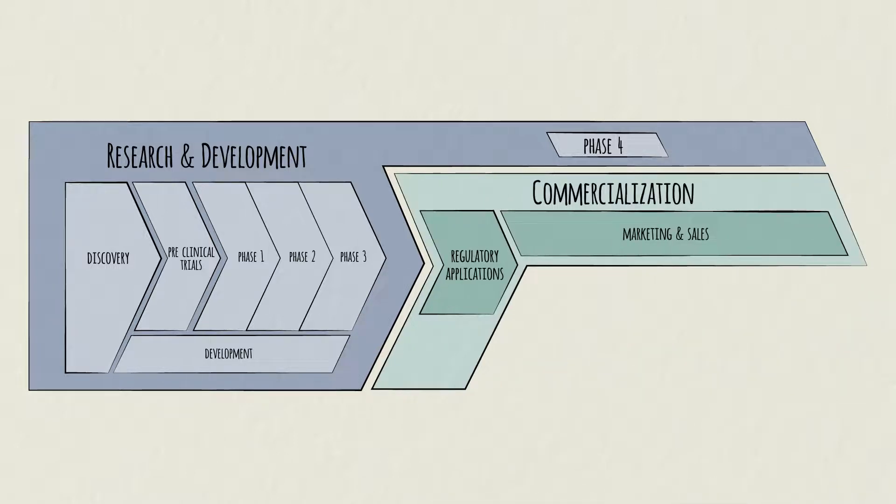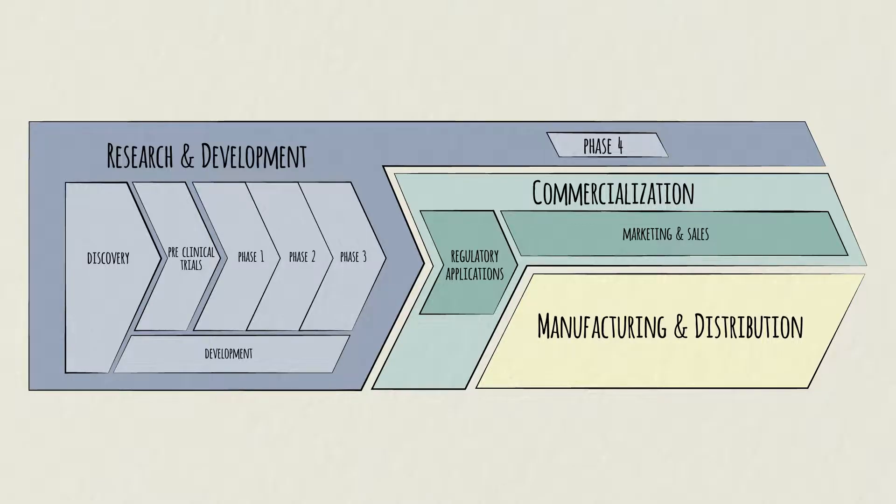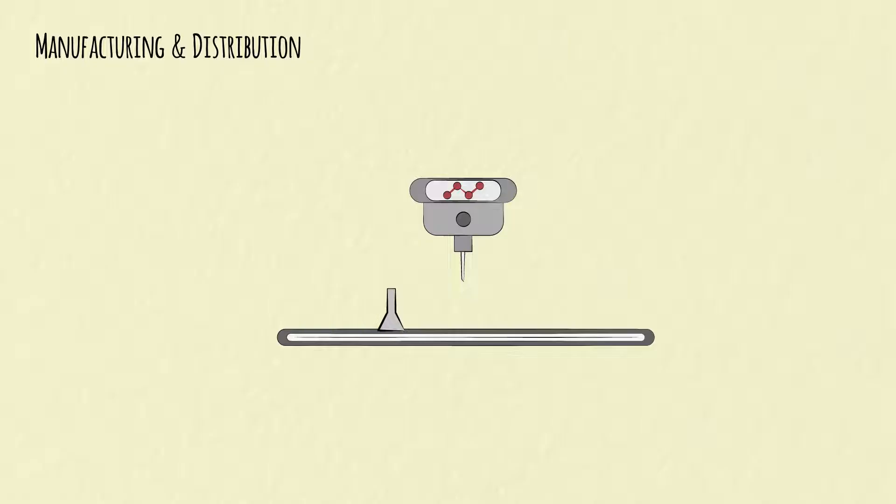Once Anna's drug is approved, it can be manufactured in commercial quantities, at scale, safely, and consistently. Pharma manufacturing processes vary significantly. It all starts with production.